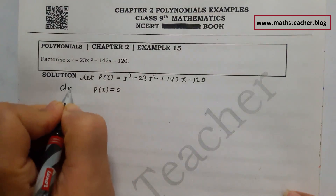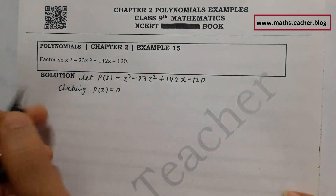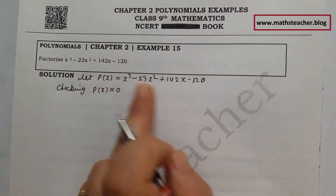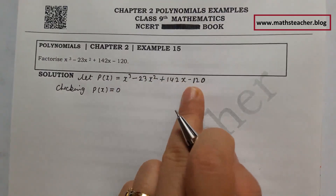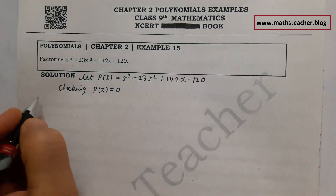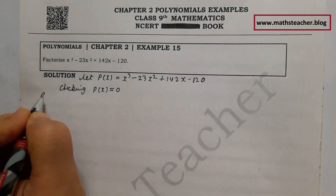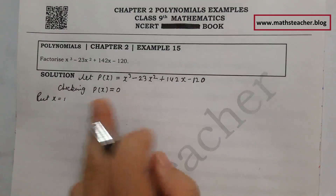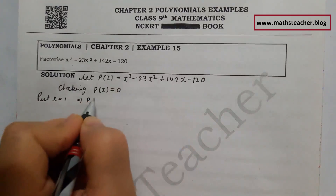Let's check where p(x) is equal to 0. We will put a positive value because 2 terms are minus and 2 terms are plus. First of all, the value we mostly try is x equal to 1.